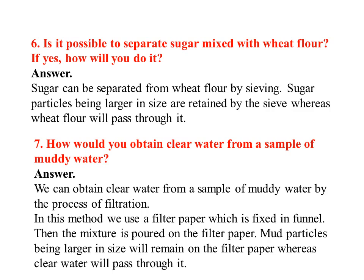Below the sieve, wheat flour makes a heap, while sugar remains on top of the sieve. Sugar particles, being larger in size, are retained by the sieve, whereas wheat flour passes through. So it is possible to separate sugar from wheat flour by sieving. However, if a dough has already been made mixing sugar and wheat flour with water, then separation becomes impossible.